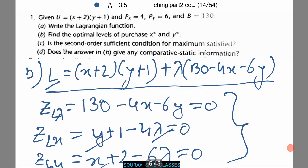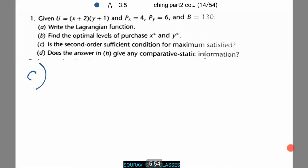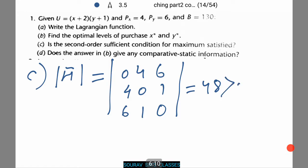Now we'll have to find the second order sufficient condition for maximum satisfied. Let's clear the screen and we'll start off again. For this we need to find the Hn determinant, that is H dash equals to 0, 4, 6, 4, 0, 1, 6, 1, 0. This is equal to 48 greater than 0. Hence since this condition is satisfied, we can say that utility is maximized.